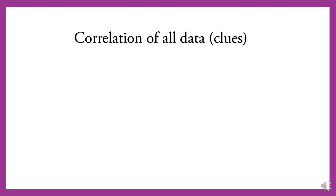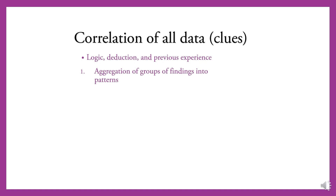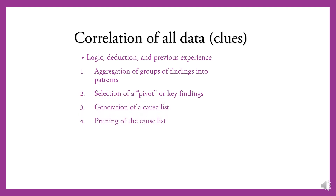To correlate all the data obtained from examination, we need to apply logic, deduction, and previous experience. The steps are: first, aggregation of groups of findings into patterns; second, selection of pivotal or key findings based on the examination; third, generation of a cause list; fourth, pruning of the cause list; fifth, selection of the diagnosis; and sixth, validation of the diagnosis.